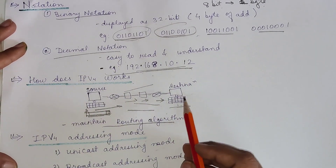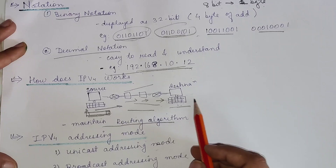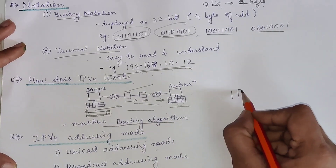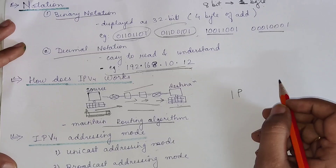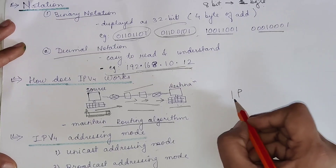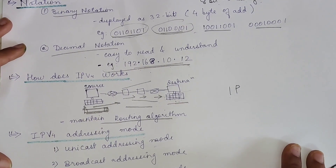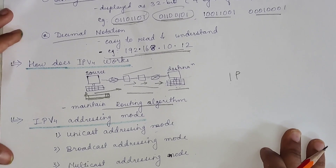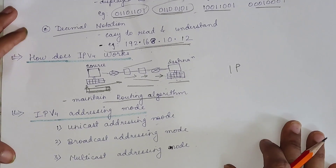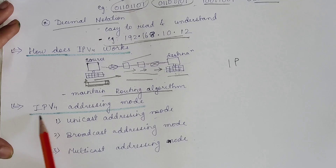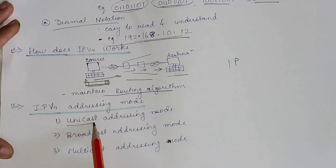You can also watch my previous IP addresses video where I explain simply what an IP is — I will provide the link in the description box. Now, there are different addressing modes used for IPv4: unicast, broadcast, and multicast.